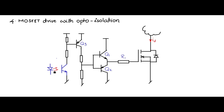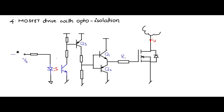So let me ground this and then connect the pulse source to this optocoupler diode in this fashion, and we have VB, the pulse source, here.